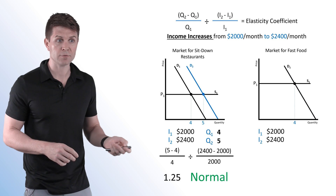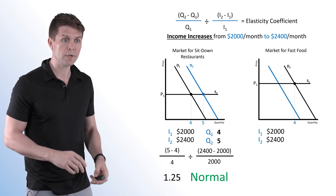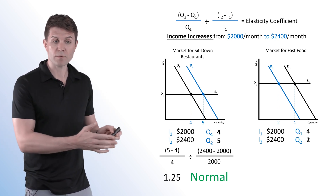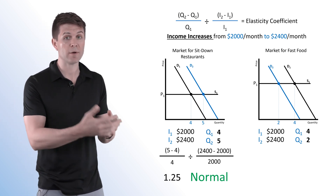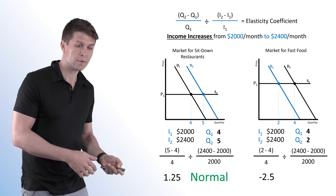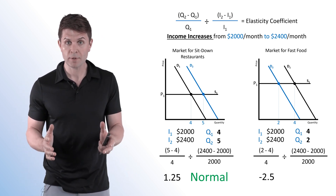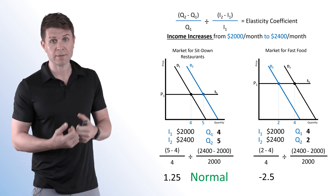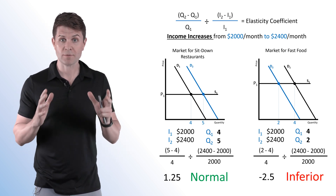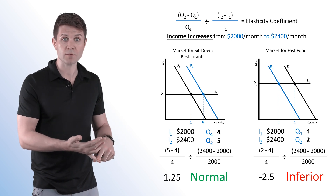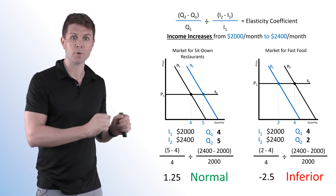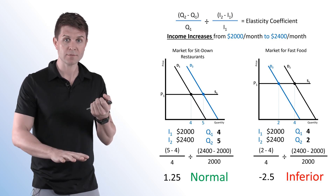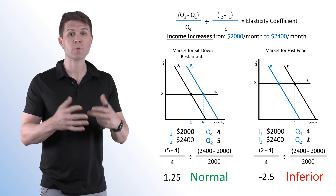On the other hand, we have the market for fast food. The income change is the same, but we see a decrease in demand, resulting in a lower quantity demanded going from 4 to 2. We were buying 4, now we have more money, and we only buy 2. When we throw this into the formula, it ends up being negative 2.5. Because we have an increase in income and a decrease in quantity demanded, the coefficient is negative — this means it's an inferior good. A negative coefficient means when we have more money, we buy less; or when we have less money, we buy more.